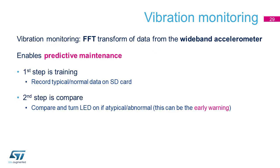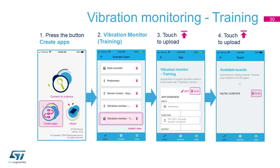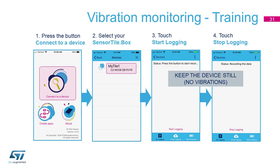For more advanced users and for a typical Industry 4.0 application, the vibration monitoring example is available. This example is composed of two steps: training and compare. The first part requires loading the vibration monitor training app, which stores the vibration spectrum of a machine in the SensorTile.Box while it is in operation and working correctly. Select and upload it in the standard way. During the run of this example, it is important that no vibrations are given to the SensorTile.Box that have not been generated by the machine under test, so it is important to keep the machine stable.